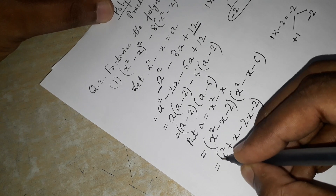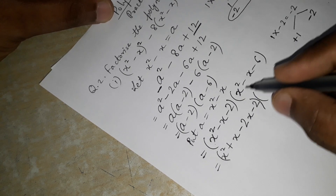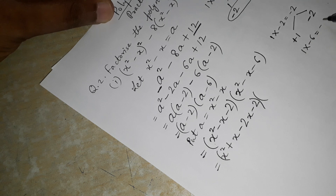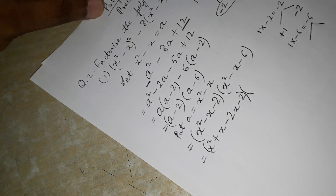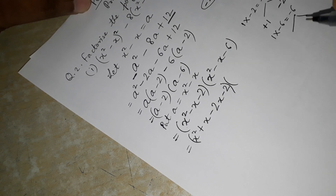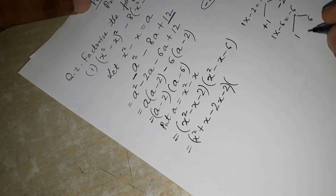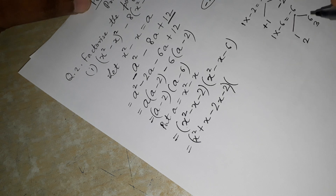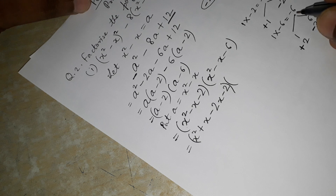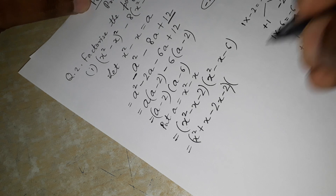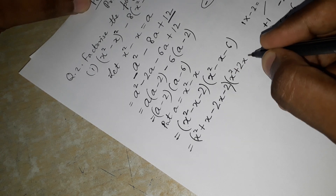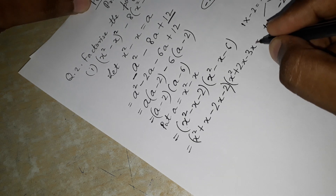For the second bracket, x² - x - 6: multiply 1 into minus 6, giving minus 6. We need to split so that product is minus 6 and sum is minus 1. Checking: 1 and 6 give sum 7; 2 and 3 give sum 5, difference 1. We want minus 1, so give minus to the bigger number: +2 and -3. So we write x² + 2x - 3x - 6.